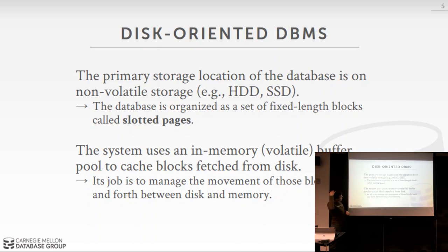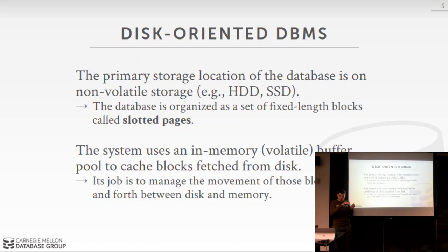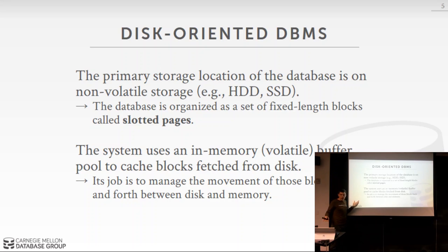A disk-oriented database system is one where the architecture assumes the primary storage location is on non-volatile storage — spinning disk hard drive, HDD, or NAND flash SSD. The system organizes the database in heap files on disk, organized further into pages using slotted organization where multiple tuples are packed into a single page. You can't operate directly on data on disk; you copy it into memory, and the buffer pool serves as a cache for those pages retrieved from disk.